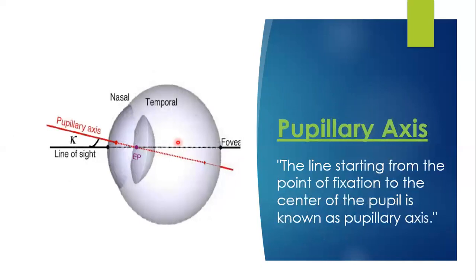Pupillary axis — you can remember it from here: it is the line which is related to the pupil. The line joining the fixation point and the center of the pupil and extending further — that is the pupillary axis. The line starting from the point of fixation to the center of the pupil is the pupillary axis.